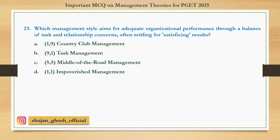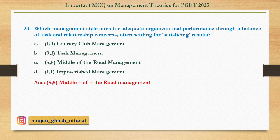Question 23: Which management style aims for adequate organizational performance through a balance of task and relationship concern, often settling for satisfying results? Option A: Country club management. B: Task management. C: Middle of the road management. D: Impoverished management. Answer is Middle of the road management.